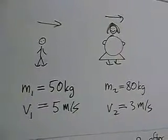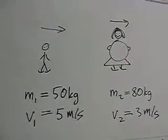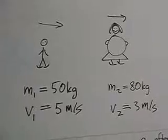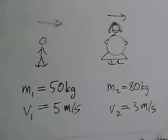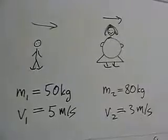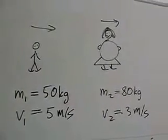The second case of the same situation, we have the little boy and grandma on an ice rink. In this case, the boy is moving at 5 meters per second, and the grandma is moving in the same direction as the boy, but at 3 meters per second.